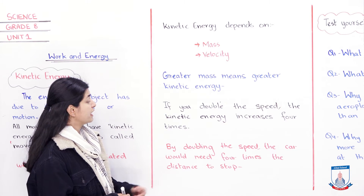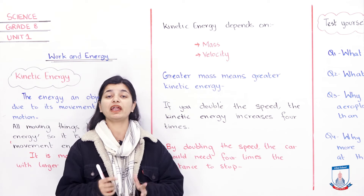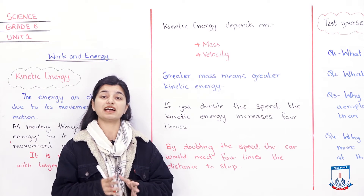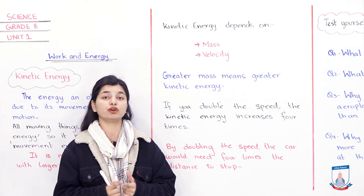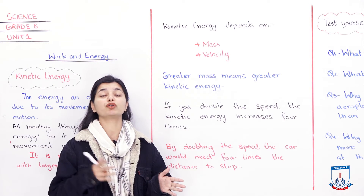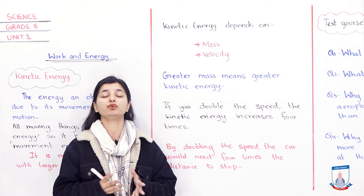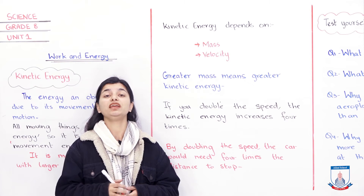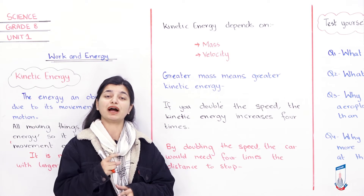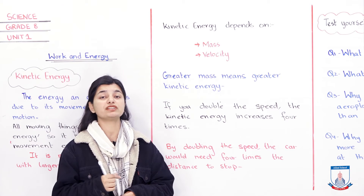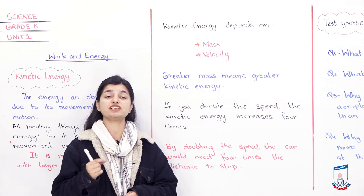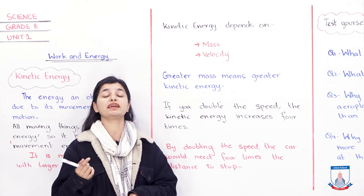If you double the speed, the kinetic energy increases four times. For example, if a car goes at a certain speed, you calculate its mass and speed to get its kinetic energy. Now, if a car and a truck are going at the same speed, will their kinetic energy be the same? No, it will not be the same. Why? Because their mass is different. The car's mass is less than the truck's mass, so the car's kinetic energy is less than the truck's kinetic energy.